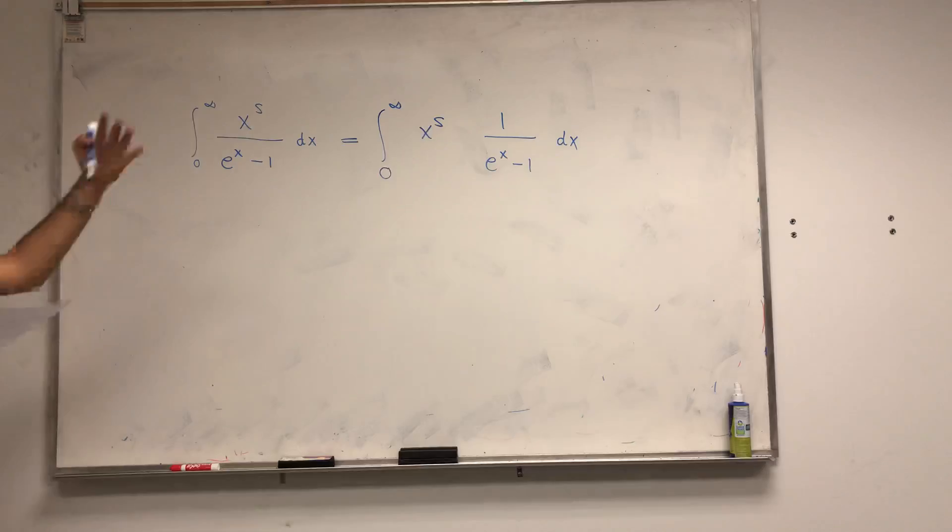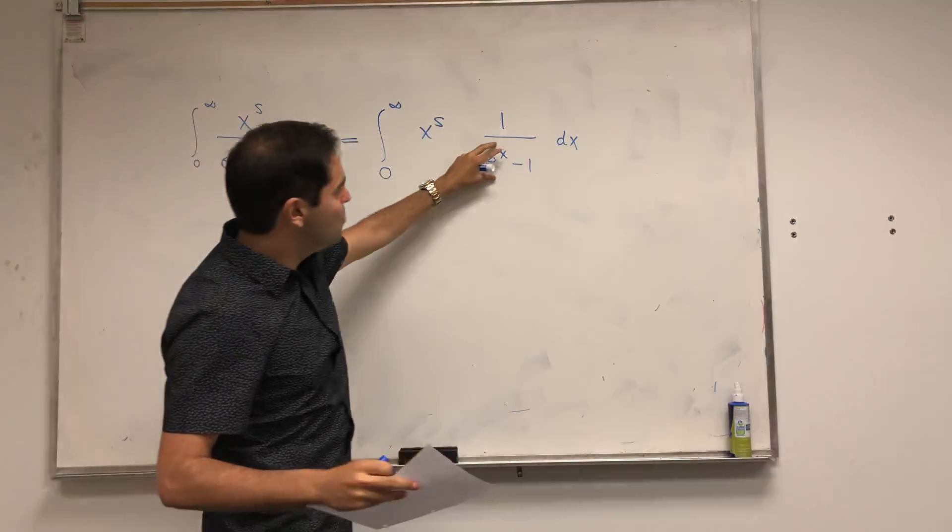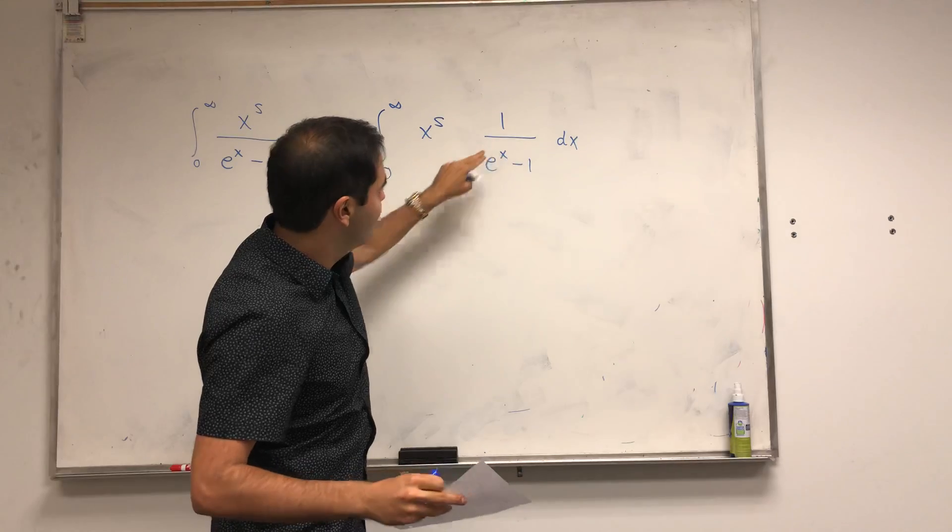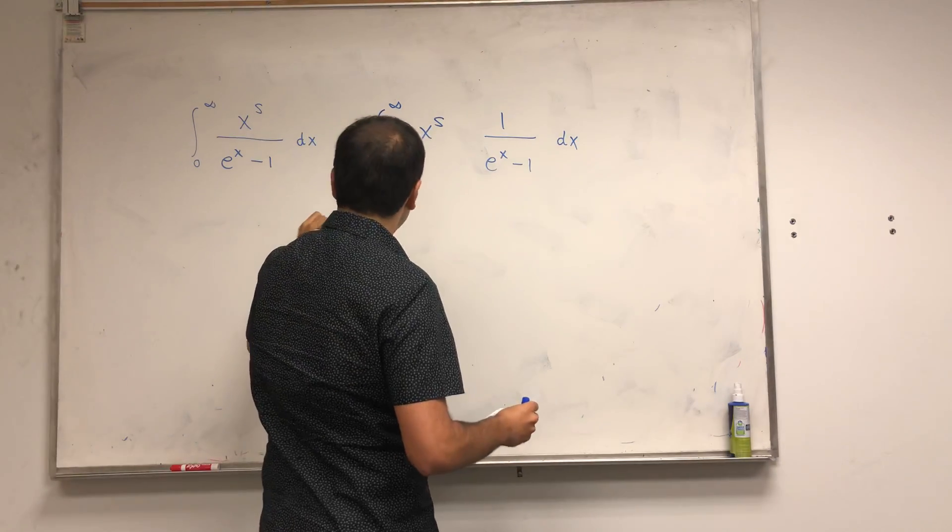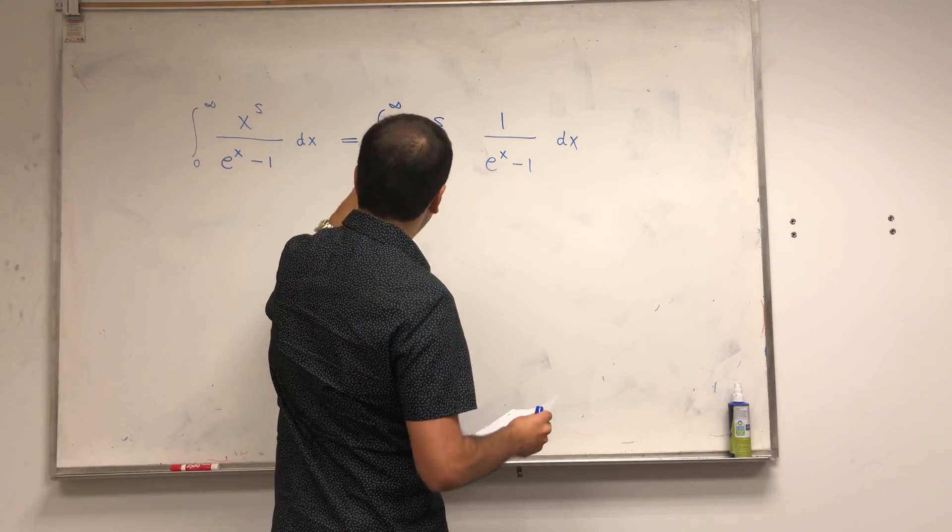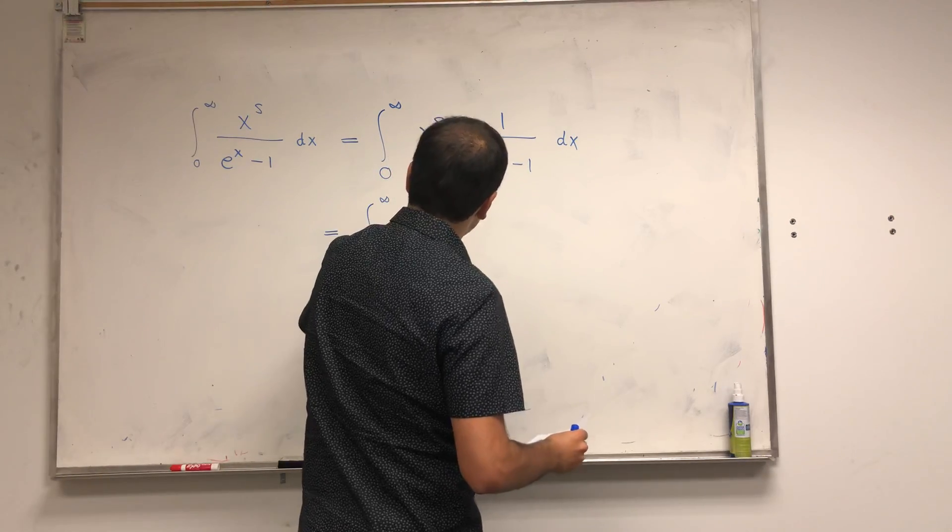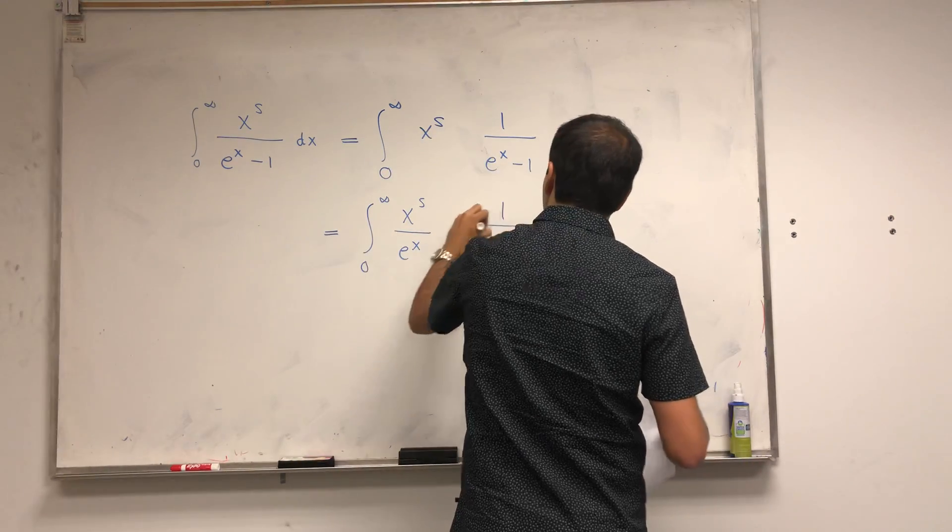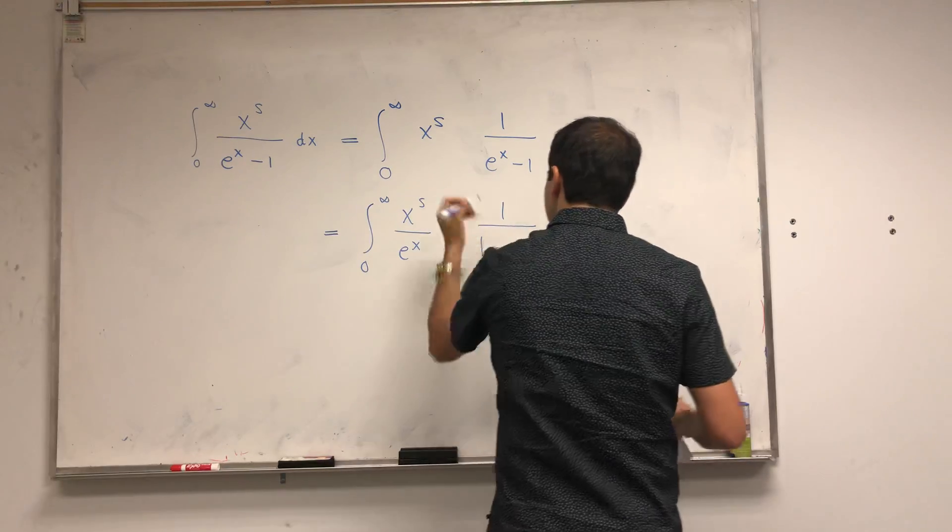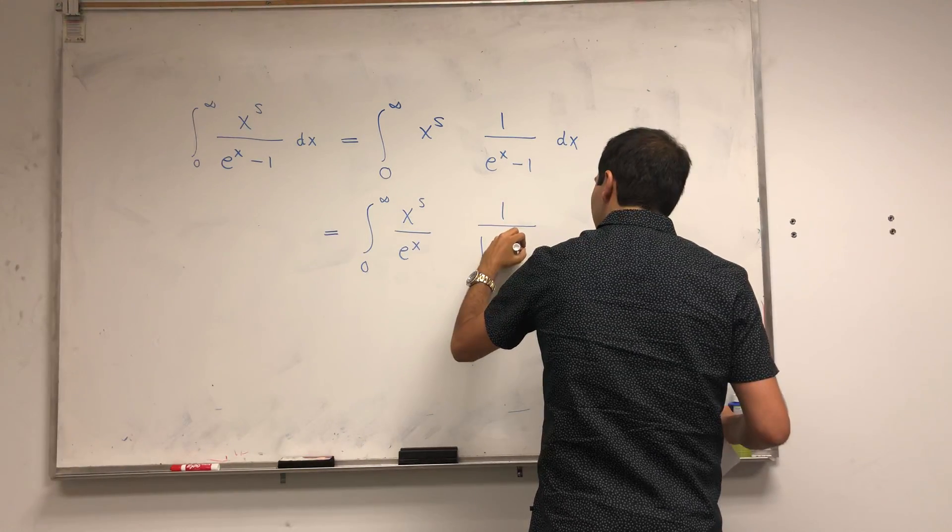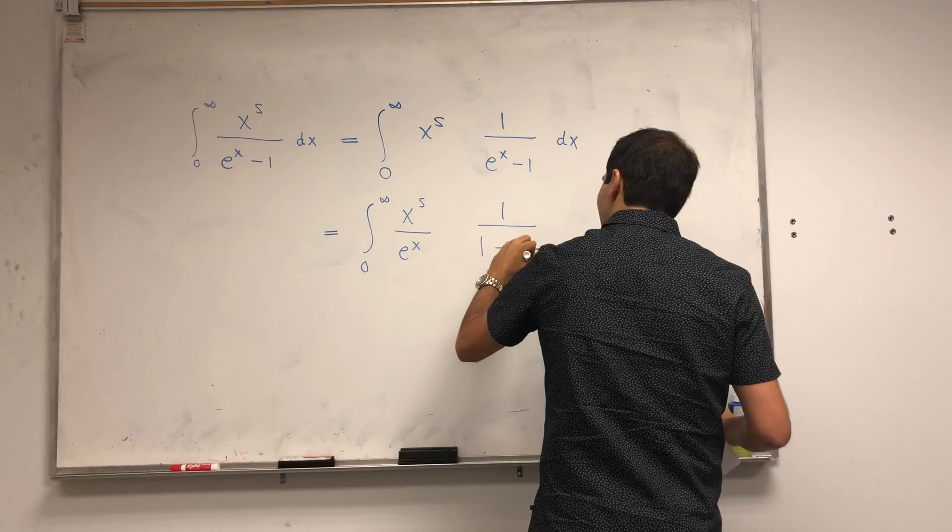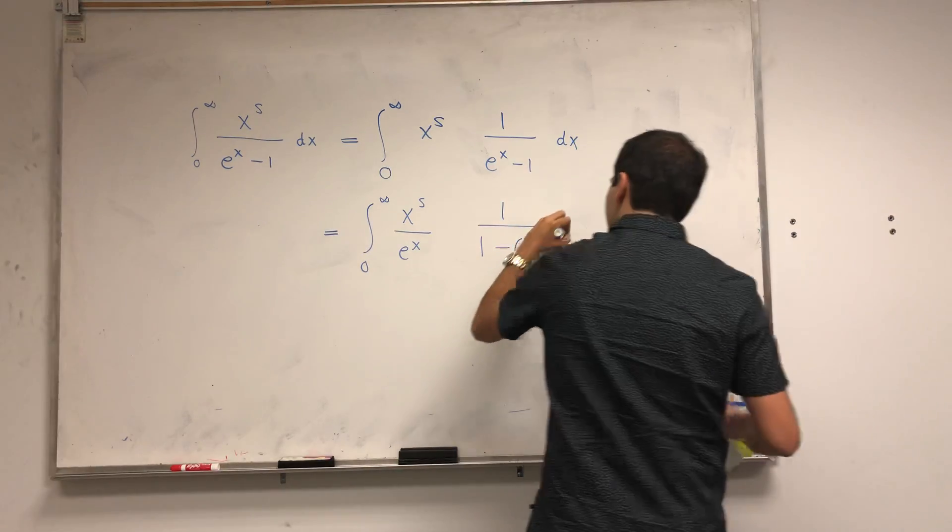And we'll look, this almost looks like a geometric series, except what would be nice if this term is less than 1. And to do that, let's take out an e to the x. So x to the s over e to the x over 1 over 1 minus e to the negative x. Let's keep it that way.